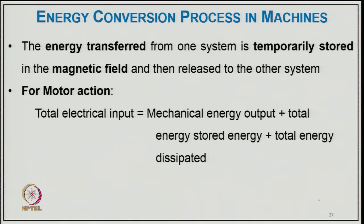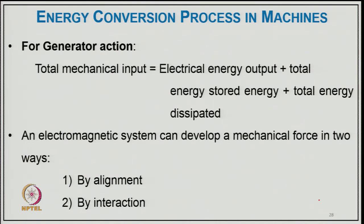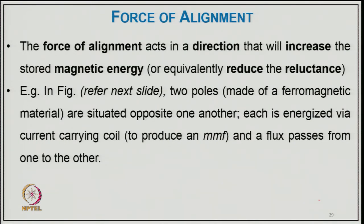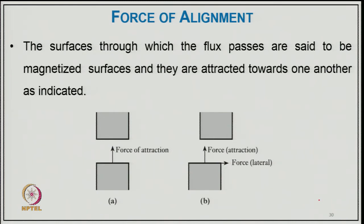For motor action, total electrical input equals mechanical energy output plus total stored energy plus total energy dissipated as losses. For generator action, total mechanical input equals electrical energy output plus total stored energy plus total energy dissipated. Any electromagnetic system can develop mechanical force in two ways: by alignment or by interaction. The force of alignment acts in a direction that increases stored magnetic field energy, or equivalently reduces the reluctance. For example, two poles of ferromagnetic material situated opposite each other, each energized by a current-carrying coil, produce an MMF and flux passes from one to the other.